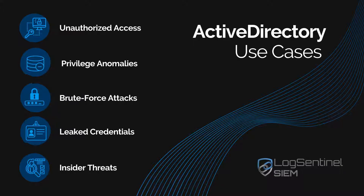The first use case is unauthorized access. By using a next-generation SIEM, you will be able to monitor authentication events and get alerted for anomalies. The second use case is privilege anomalies — SIEM will help you identify and respond to suspicious privilege management activities. The third use case is brute force attacks. To detect brute force attacks on Active Directory accounts, you need to keep track of logs, which can be easily done if the SIEM supports a RESTful API.